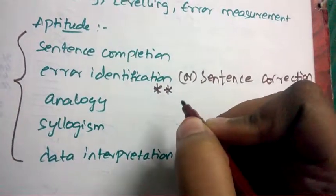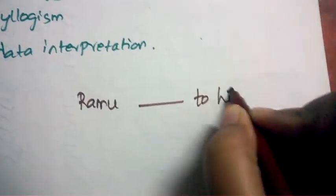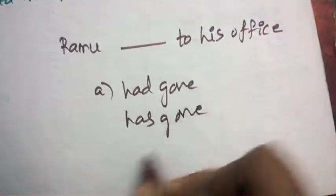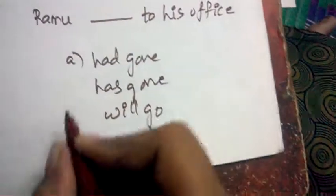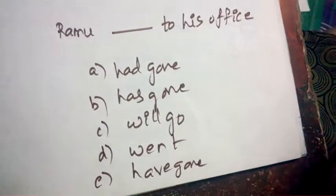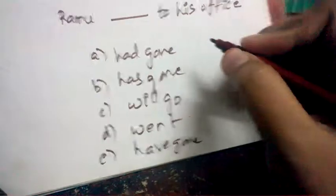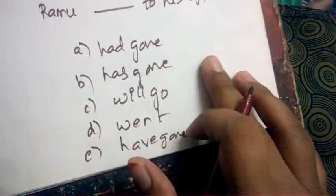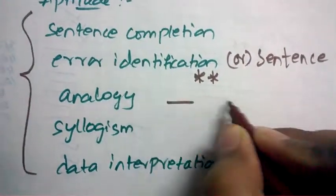For example, the options for a sentence like 'Ramu dash to his office' will be: had gone, has gone, will go, went, have gone — very close options that are hard to distinguish within limited time. Most students waste time on sentence correction and end up losing marks. So concentrate more on error identification, also called sentence correction or sentence rectification.